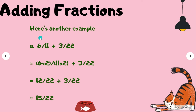Here's another example. We have 6 over 11 plus 3 over 22. You can look at 11 and see you can change it to look like 22 easily — you multiply by 2. Whatever you do to the bottom, you have to do to the top. So you end up with 6 times 2 over 11 times 2, plus 3 over 22. That gives you 12 over 22, and you end up with 15 over 22.